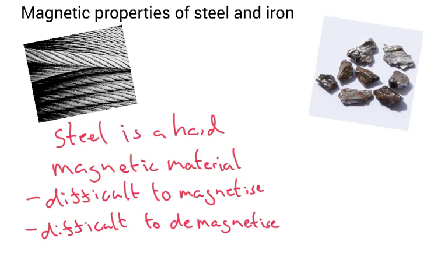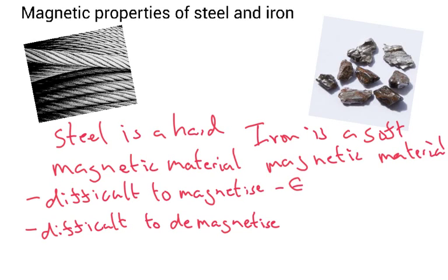Whereas iron is a soft magnetic material. It's easy to magnetize and easy to demagnetize.